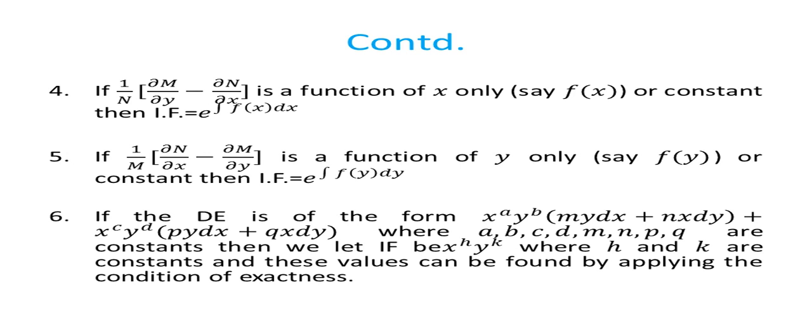The last case is: if the differential equation is of the form x^a · y^b · (m y dx + n x dy) plus x^c · y^d · (p y dx + q x dy) equal to 0, where a, b, c, d, m, n, p, q are all constants, then we suppose IF is x^h · y^k, where h and k are constants. We multiply the given equation by x^h · y^k, assume the equation has become exact, then apply the test of exactness to find the values of h and k.